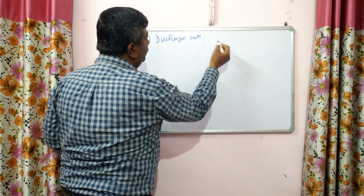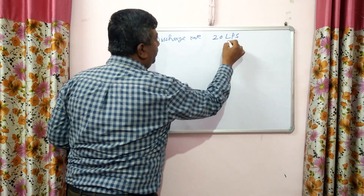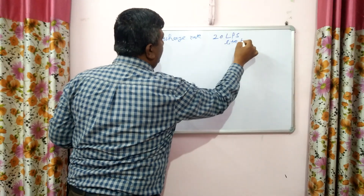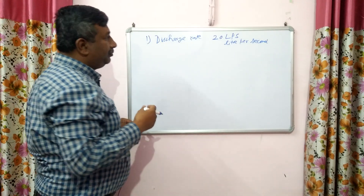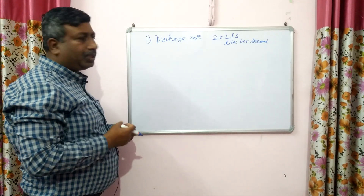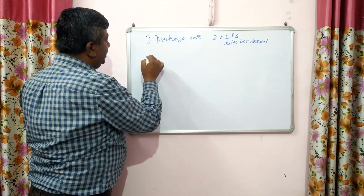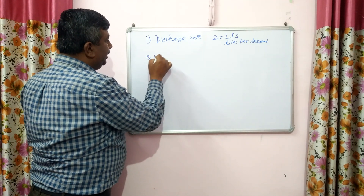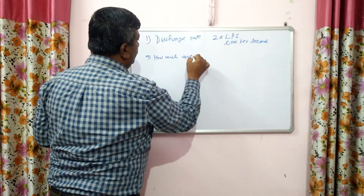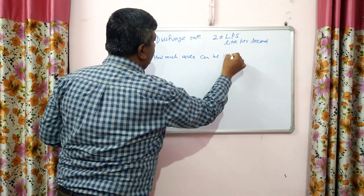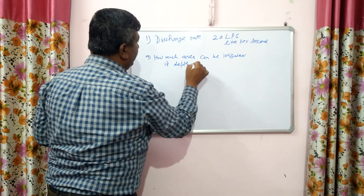For a tube well, suppose for example it is 20 LPS, means 20 litres per second — so the tube well is giving 20 litres of water in 1 second. This is the discharge rate. Then we can calculate how much area can be irrigated from this discharge rate if depth of irrigation is fixed.